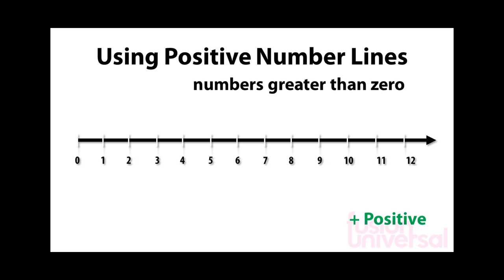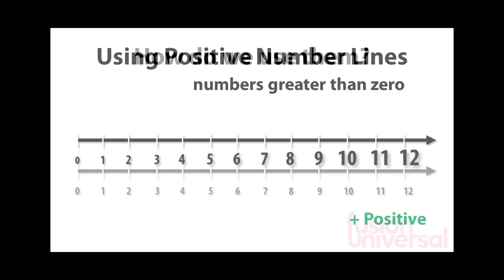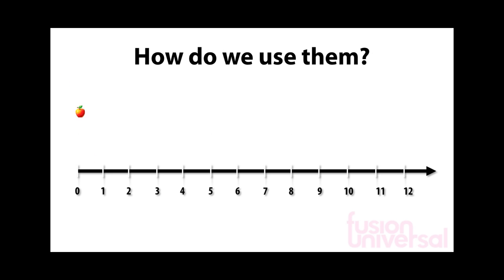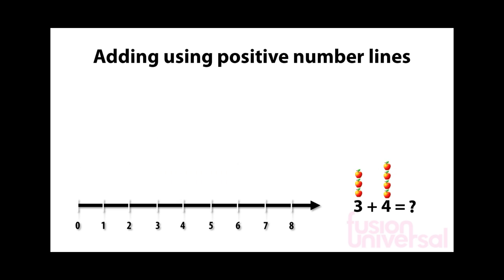Notice that the numbers get bigger as we go up the number line. Let's start by marking the number 3 on this number line. And now let's try to add 4 to this number. You can see the calculation on the right. So we place 3 on the number line as we did before.